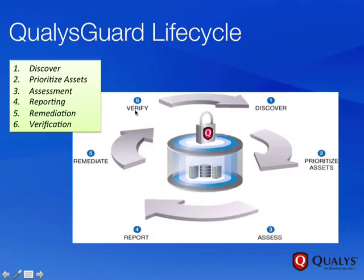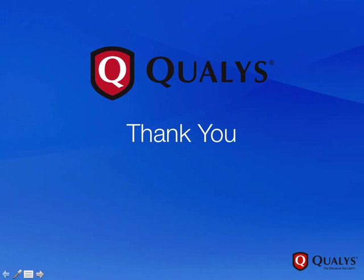Finally is the verification step. We want to go and verify that the vulnerabilities we originally found when we ran our scan are now fixed. Did we remediate like we were supposed to? Was our remediation step effective? The way we can check is by scanning again and verifying that those vulnerabilities are now gone. This is the overall lifecycle — something we'll want to continually think about when working within QualysGuard. Thank you for viewing this introductory video on QualysGuard Vulnerability Management.